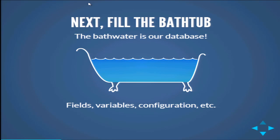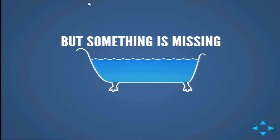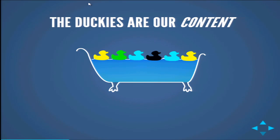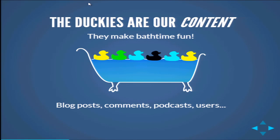Next, we fill the bathtub. The bath water is our database. Inside our infrastructure we fill it with some very important information: fields, variables, configuration information, a whole bunch of stuff that most of the time you have no idea about because it's all underneath the covers. Something's missing though — all of this is physical infrastructure. What's missing from our bathtub? Duckies, of course. We need some rubber duckies because rubber duckies make bath time fun. Duckies are our content: blog posts, comments, podcasts, users, articles. Anything you can put into a content type is a duck, supported by the bath water — the database — and the infrastructure — the bathtub itself.